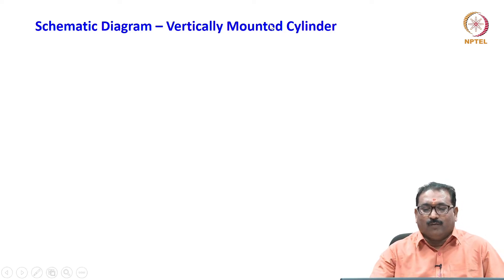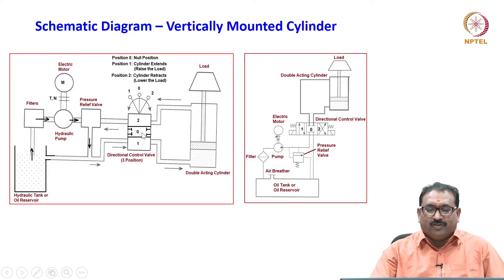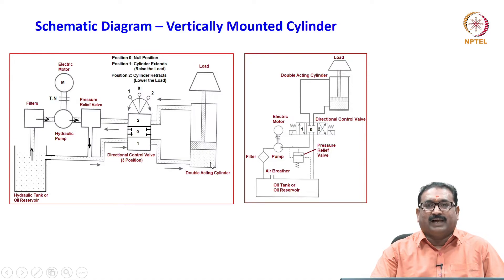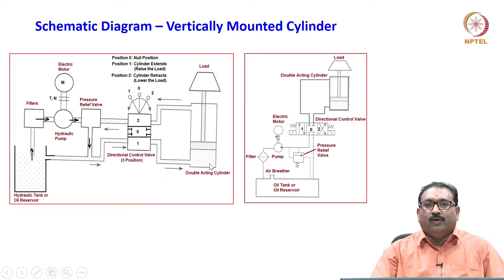Now I will show you one more thing — a vertically mounted cylinder — in which we raise and lower a load using all the same components. The direction control valve has three positions. The null position (0th position) means no flow goes to the actuator — it is at standstill. In the first position, fluid flows from the tank through the filters to the head side, raising the load, while fluid on the tail side returns to the tank. In most cases, we use a single-acting cylinder instead of a double-acting cylinder when the load is mounted vertically.